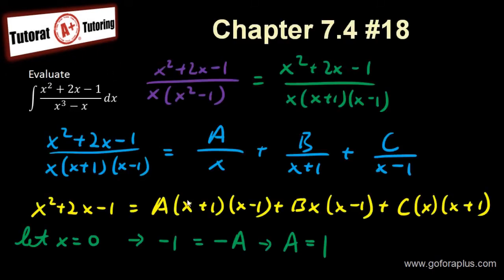Now, let x equals 1. If x equals 1, this is 0 because 1 minus 1 here is 0, so this whole thing is 0. This whole thing is also 0. I get to here, 1 and 1, 1 plus 1 is 2, so 2C.